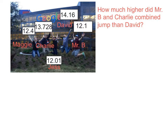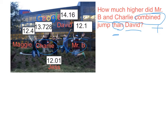So the question is: how much higher did Mr. B and Charlie combined jump than David? I'm going to break that down. 'Combined' is a fancy word for adding. And 'than' a lot of times is a clear word that means subtraction. So I'm going to have to add up Mr. B and Charlie, then take that result and subtract David. Jess's and Maggie's information doesn't matter in this case.